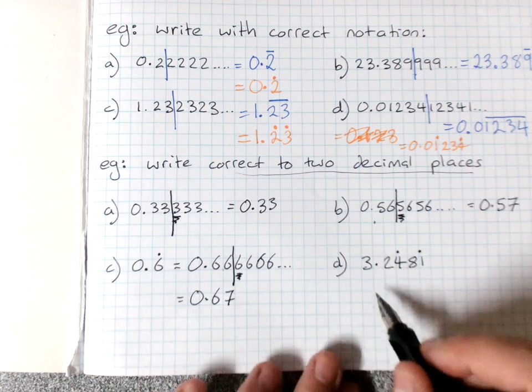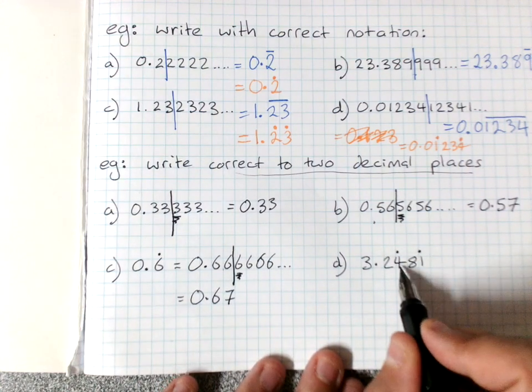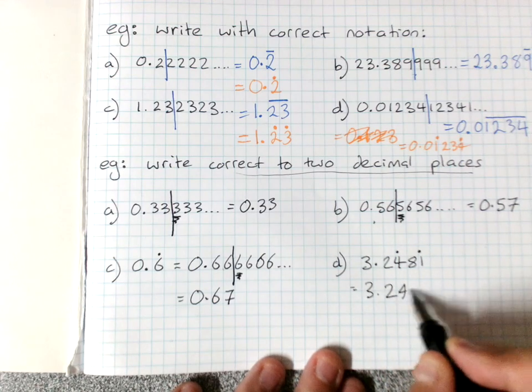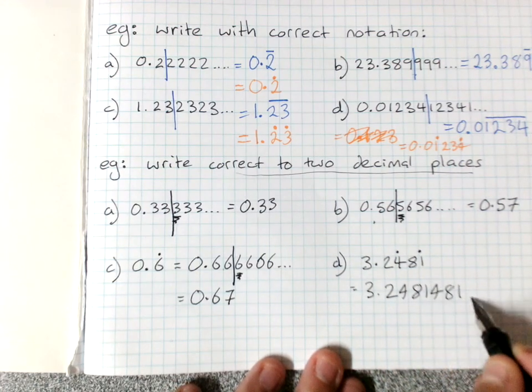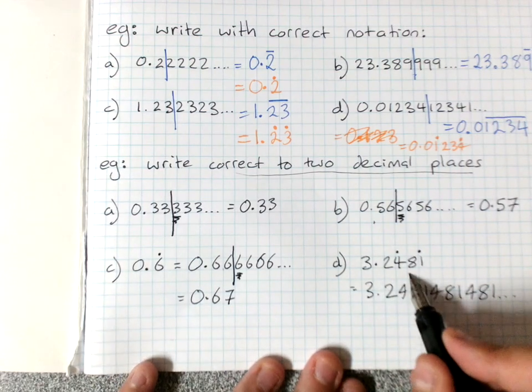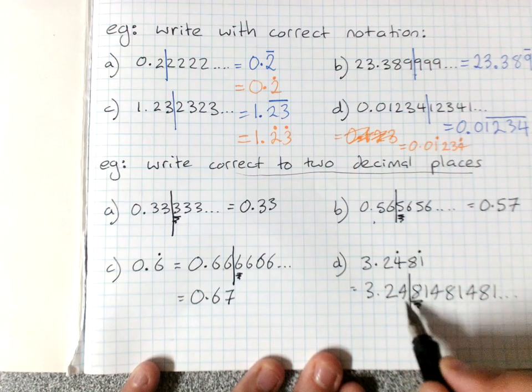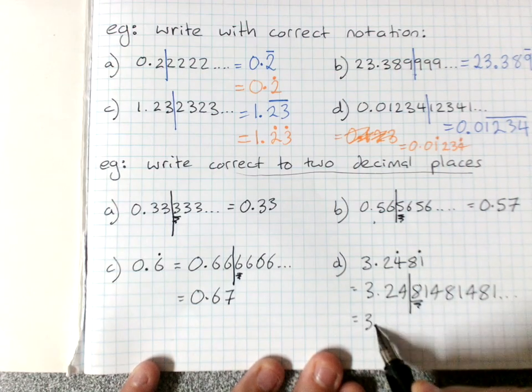And the last one, 3.2481̄. And the repeating bit is 481. So 3.2481, 481, 481. Round it to two decimal places. Cut it off. Look at the critical digit. Yes, it's five or more. So this is closer to 3.25.